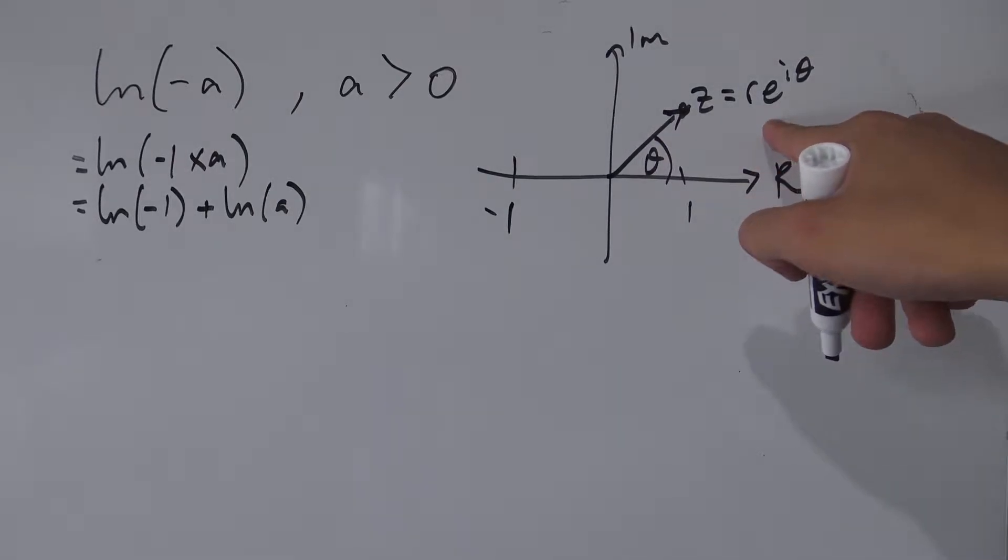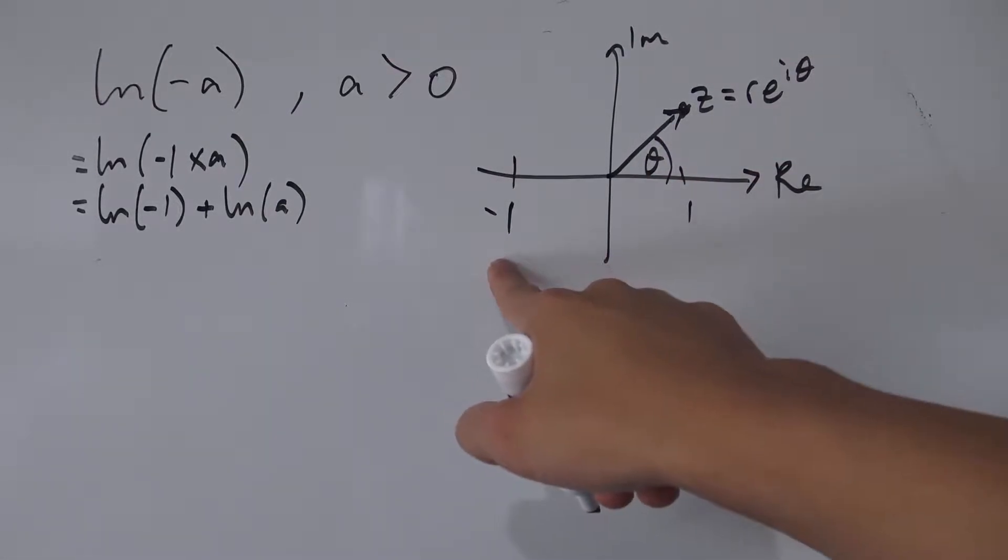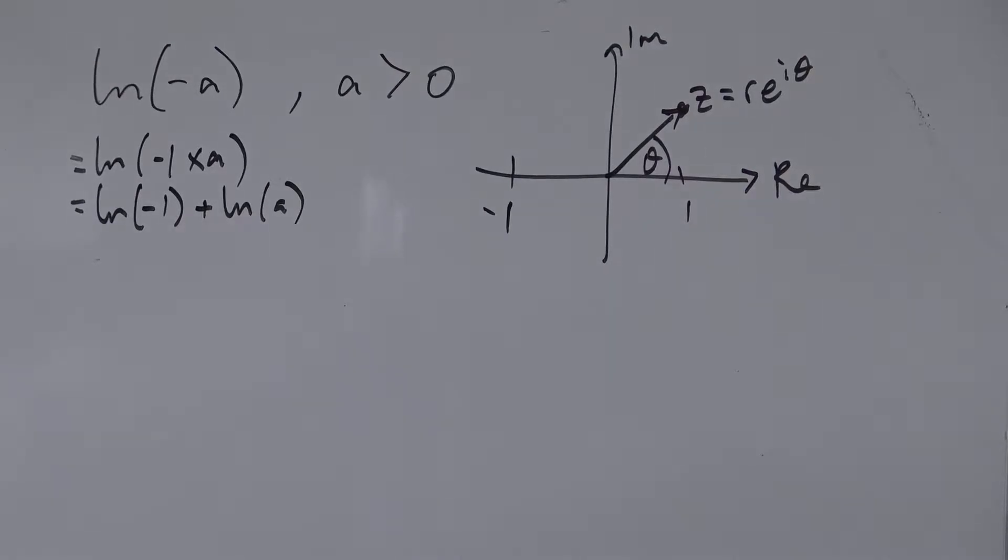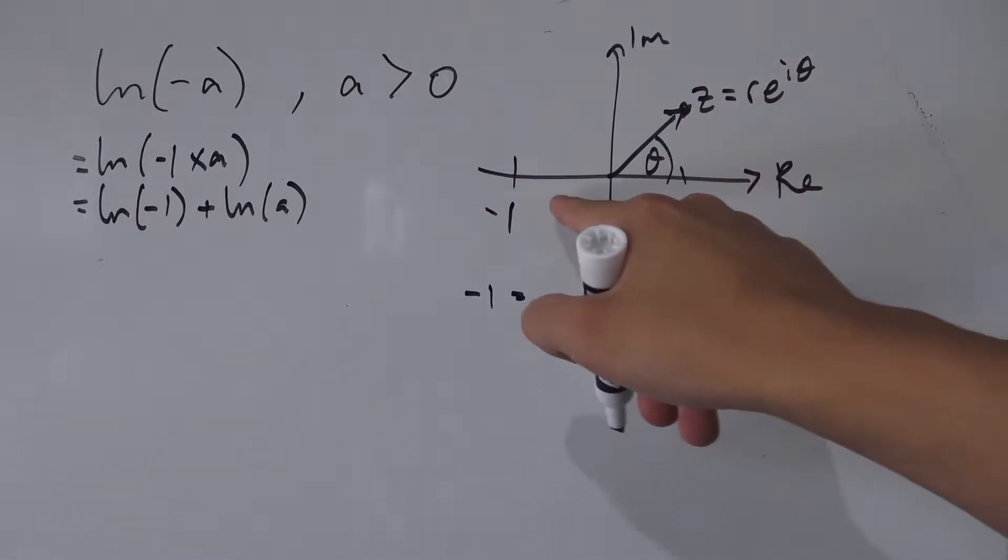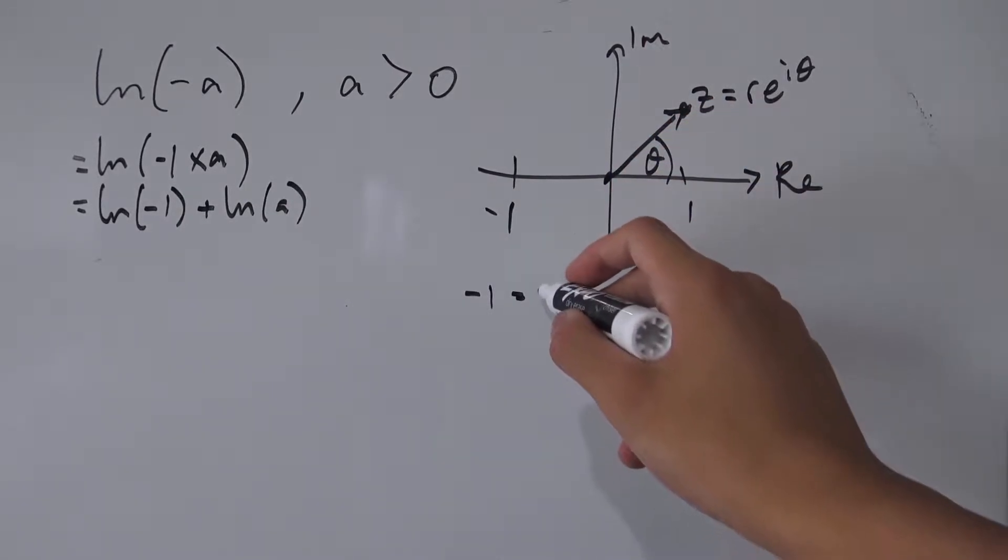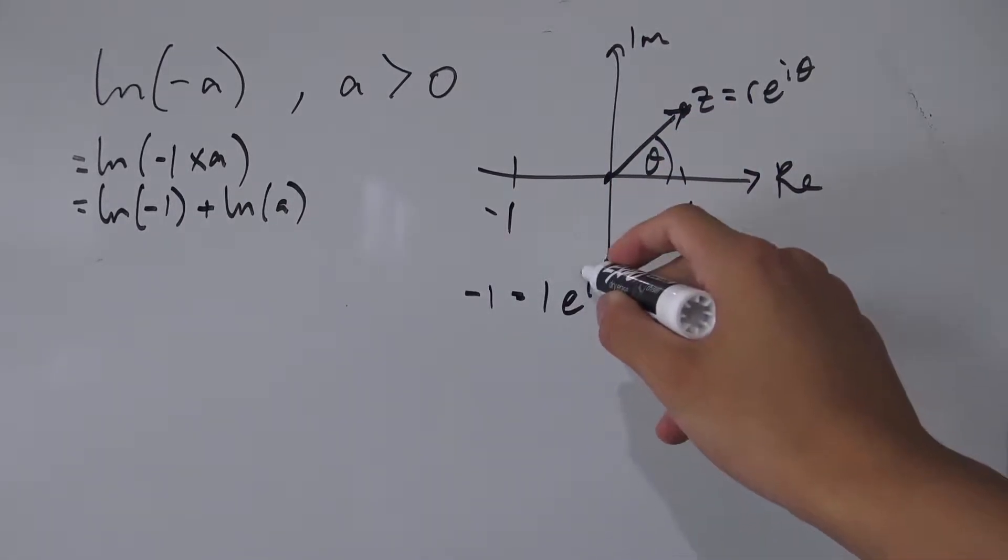So maybe we can use this form to find an alternative expression for our negative one. So our negative one: first of all we need to find the radius, and the radius here is exactly one from the origin. So we have one times e to the i...